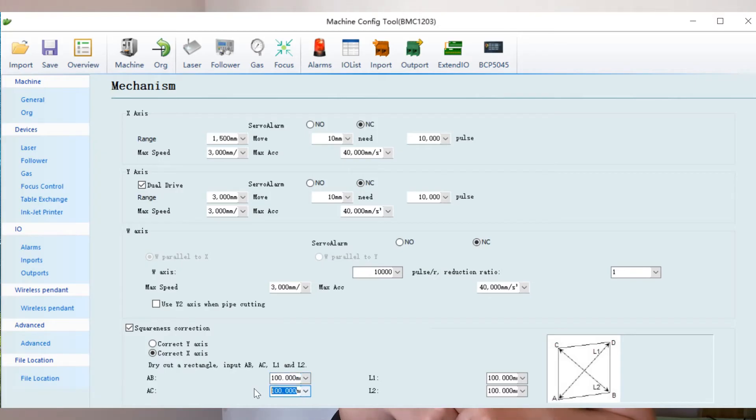After saving and exiting, the system will automatically correct the diagonal deviation based on the data. Then we can cut the same rectangular part as before and measure the diagonal to see whether the deviation is gone.